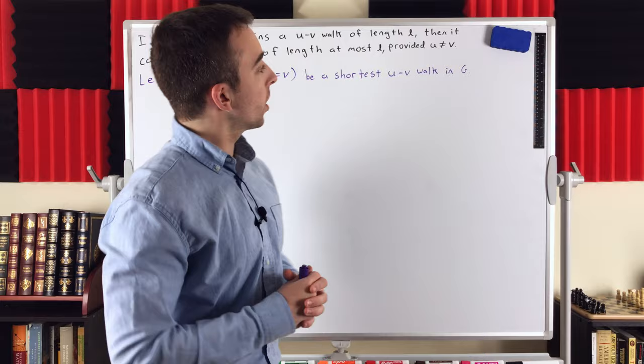The reason we want to take a shortest UV walk is because our intuition tells us that a shortest UV walk should be a path. And so that might give you some indication that we're going to proceed by contradiction. But first,